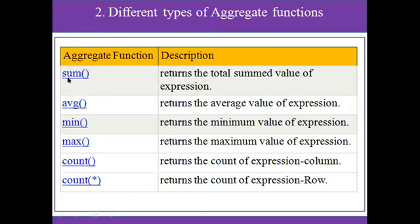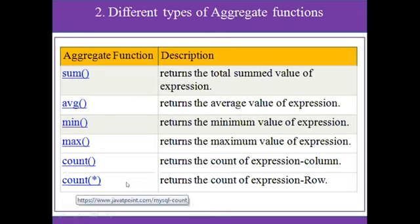The first one is sum — it returns the total sum value of an expression. Average returns the average value of an expression. Minimum returns the minimum value of an expression. Maximum returns the maximum value of an expression. Count returns the count of an expression at the column level. Count star returns the count of an expression at the row level.